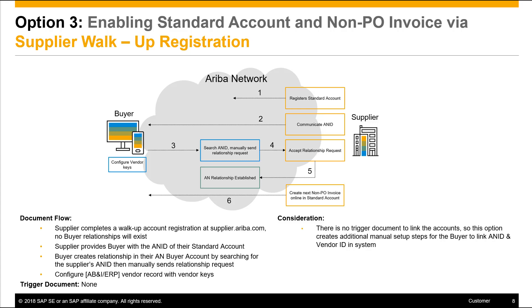The buyer will then create a relationship through their Ariba network buyer account by searching for that supplier's ANID and manually sending a relationship request. Then the buyer has to configure the vendor keys in either Ariba Buying and Invoicing or in their ERP.